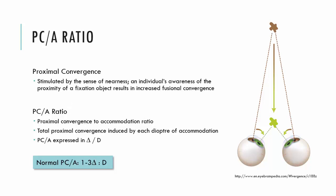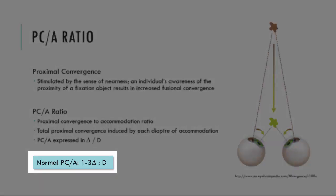The PCR ratio relates to the sense of nearness. For every diopter of accommodation, we will induce a certain amount of proximal convergence. This is relatively low — somewhere between one to three diopters of proximal convergence occurs with every diopter of accommodation.